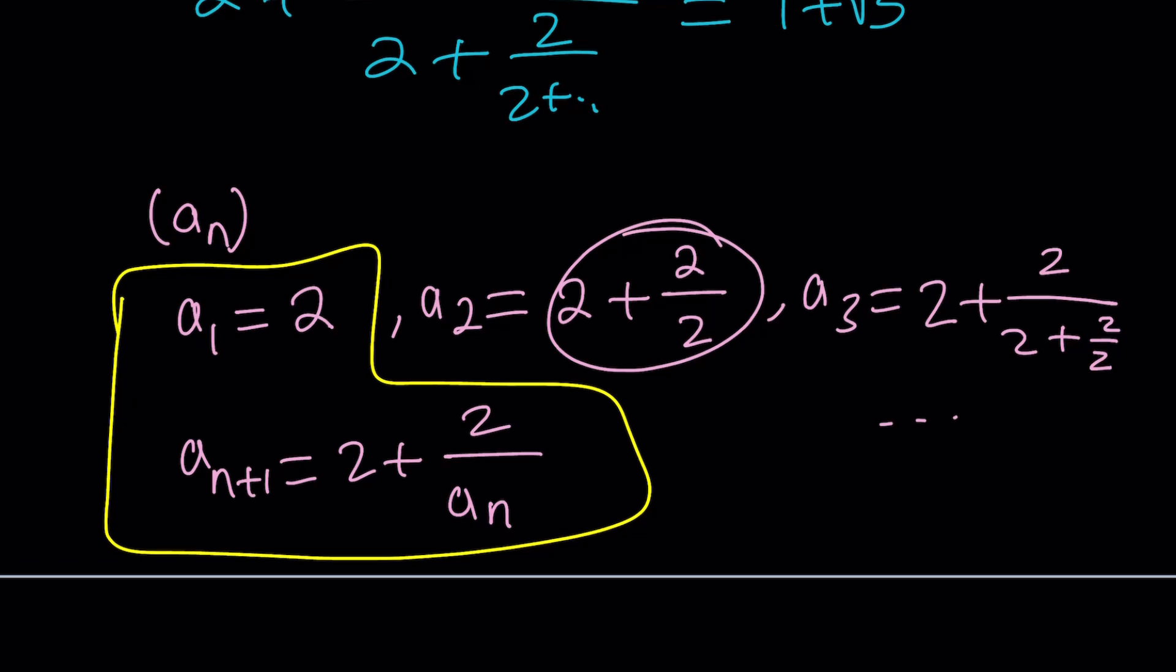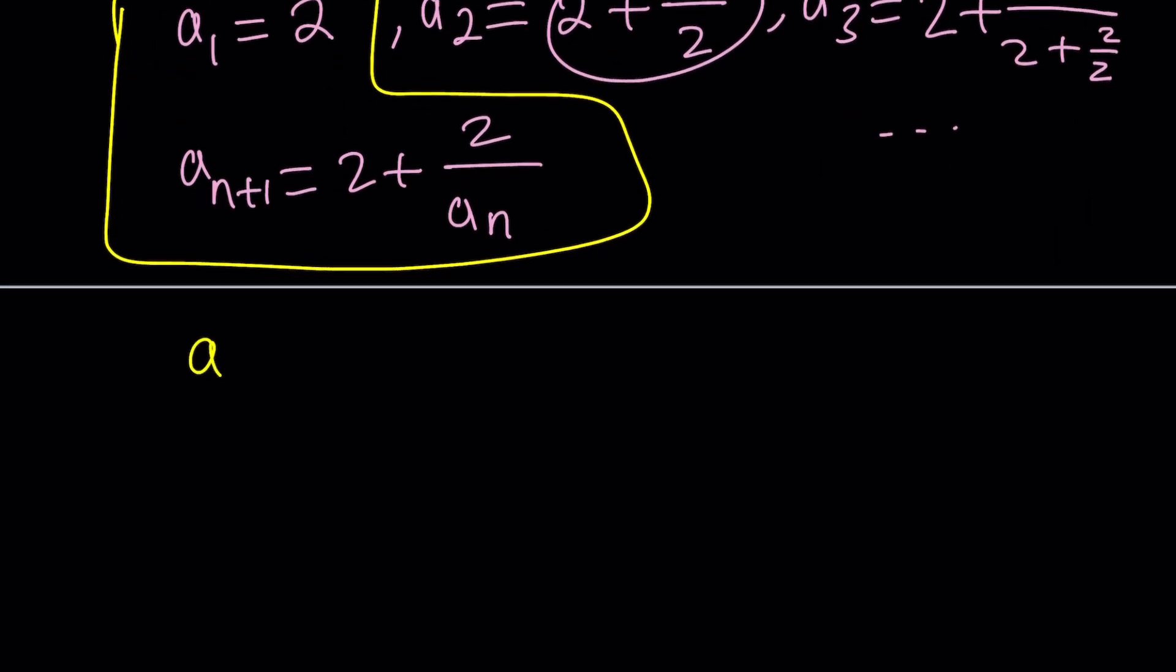Let's go ahead and take a look at some values. For example, what happens to the second term? 2 plus 1 is equal to 3. So a sub 1 is 2. A sub 2 is 3.